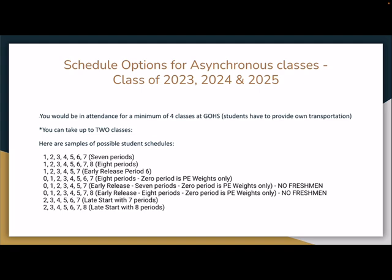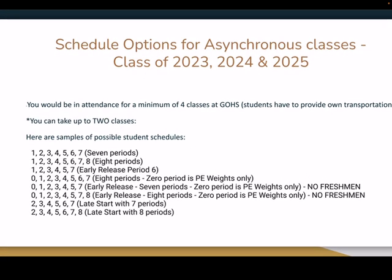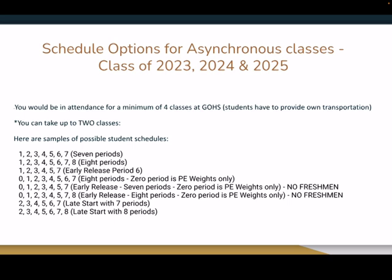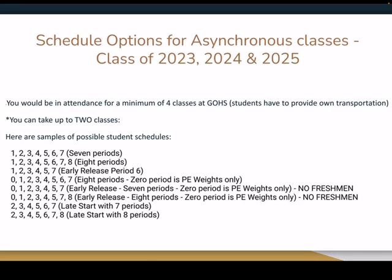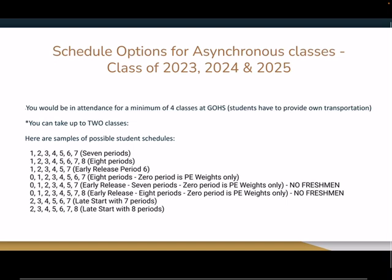Schedule options for asynchronous classes for the class of 2023, 2024, and 2025 — as you can see, there are many different scenarios you could have. The most important thing to underscore: you would be in attendance and required for a minimum of four classes at Great Oak High School, and students have to provide their own transportation. Freshmen can't do zero period, but they could structure their schedule to have seven periods — for example, periods one through six plus a seventh asynchronous class at the end of the day. The options go on and on; it's almost like making your own schedule à la carte, while still meeting graduation requirements.